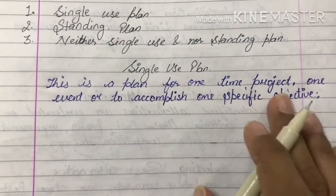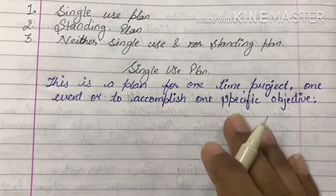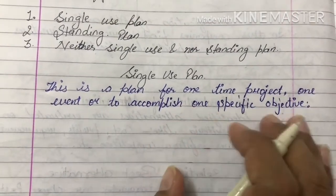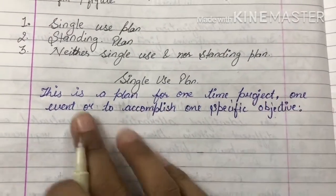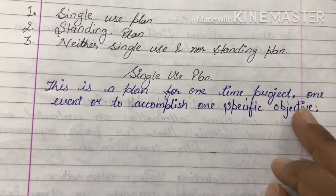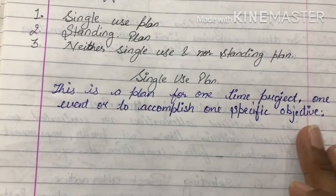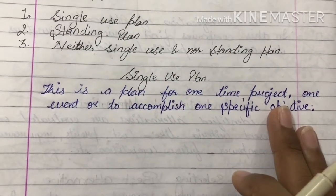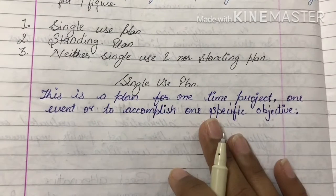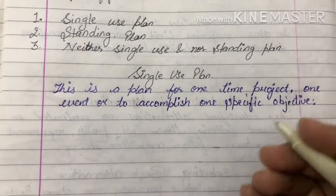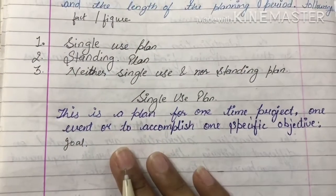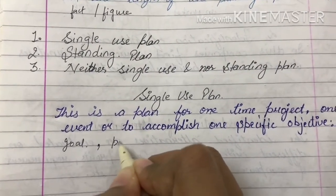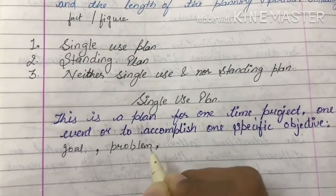A single use plan is a plan for one-time project, or one event, or to accomplish one specific objective. इस तरीकी के plans specific objectives के साथ बनाये जाते हैं, और वो भी सिर्फ one time event या one time project के लिए. It applies to activities that do not reoccur or repeat. These are specifically designed to achieve particular goals.